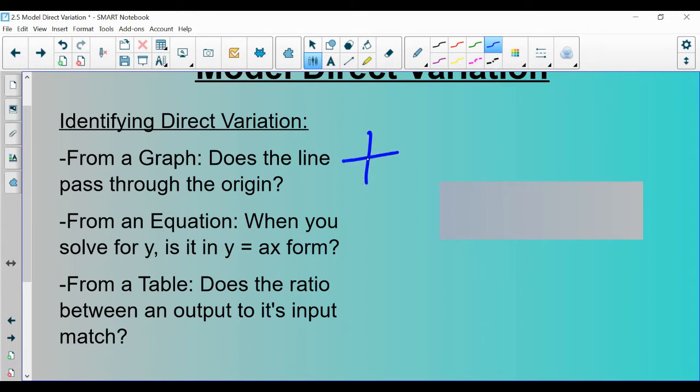Of course, the origin is zero, zero, where it intersects, right? If the line goes through the origin, it is direct variation.